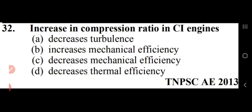Increase in compression ratio in a CI engine: if we increase the compression ratio in a CI engine it will decrease the mechanical efficiency. Option C — decreases mechanical efficiency — is absolutely right.